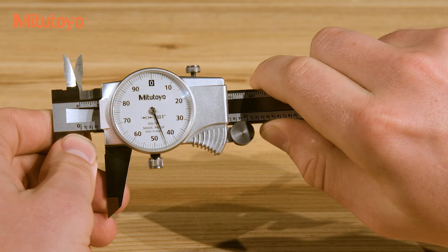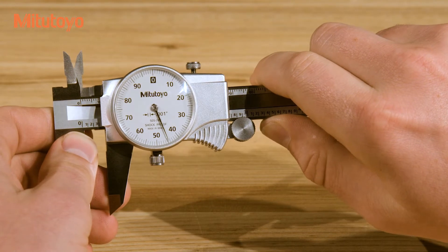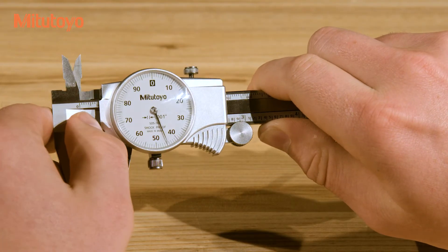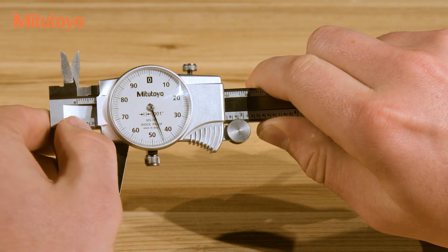Reading the caliper is a two-step process. First, look at the sliding jaw and note the last main scale graduation that it passed. In this case, that's the three, so that's 0.3 inches.